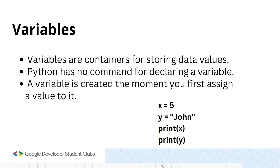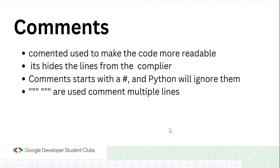One more thing: you don't need to declare the data type while assigning values. Python is a dynamically typed language. Whenever you type 5 or 6, the variable will automatically declare itself as an integer. When you give a value inside double quotes, it will automatically take it as a string — no need to write 'int a' like in Java.